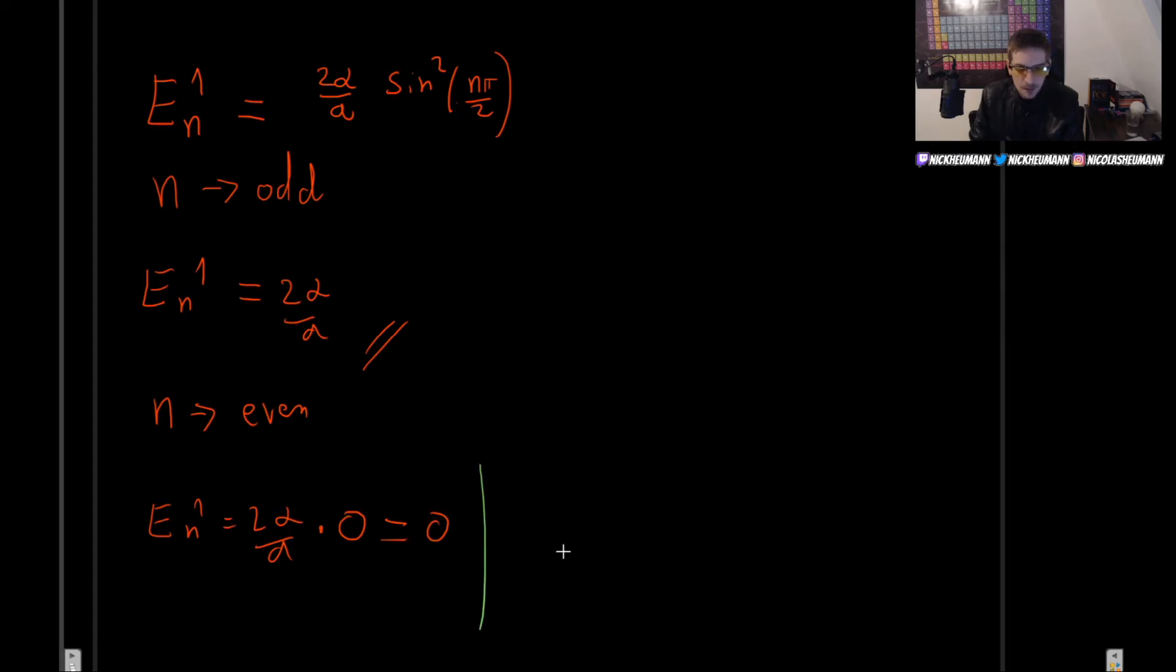So, putting this together means that the energy levels E_n^1 will be 0 if n is even, and 2 alpha over a if n is odd.